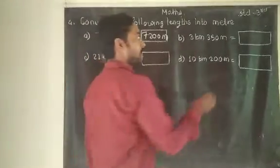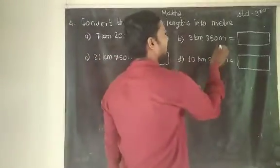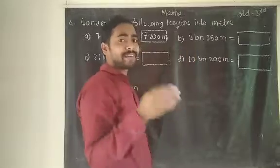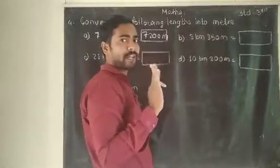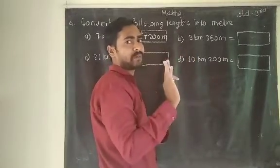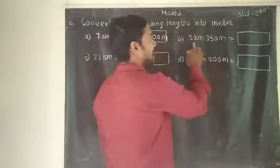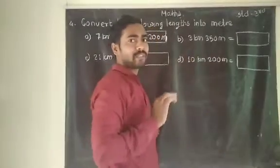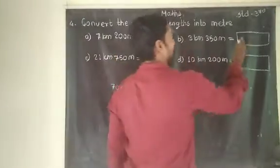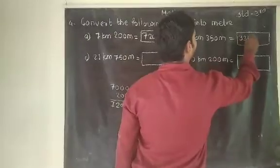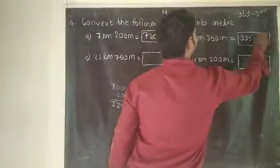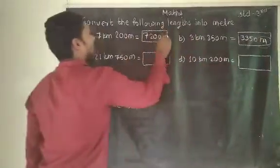Part (b): 3 kilometers and 350 meters. 3 kilometer means 3000 meters. And 350 meters stays as it is. So 3000 plus 350 equals 3350 meters.